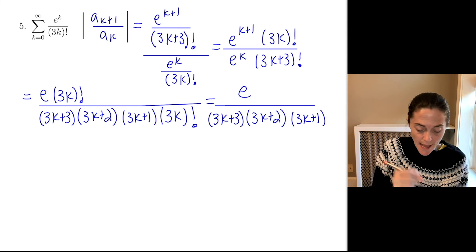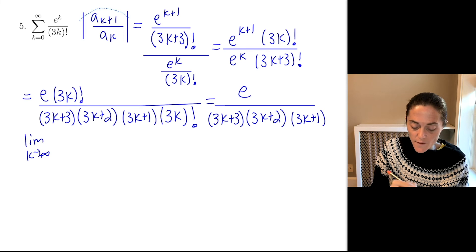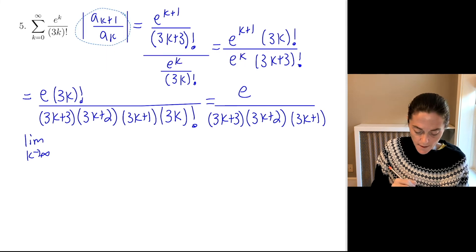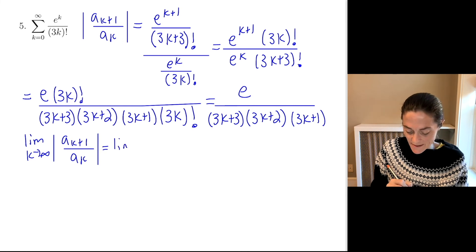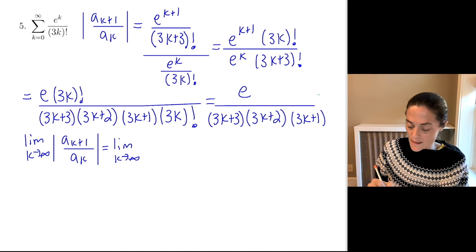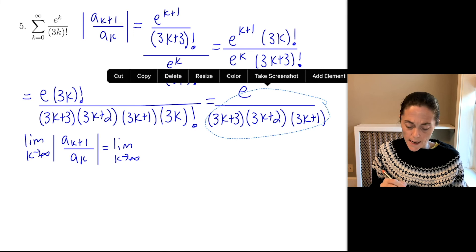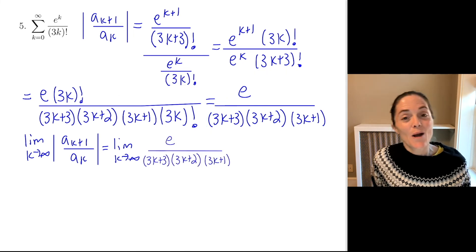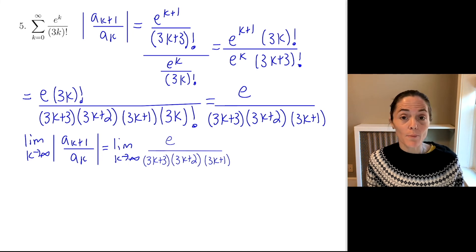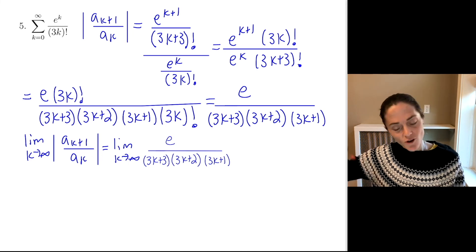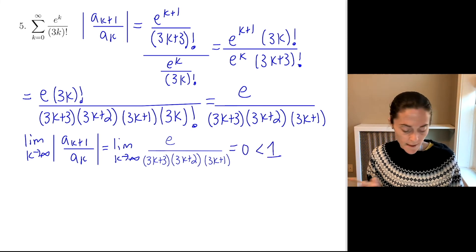I'm ready to take a limit. We take a limit as k goes to infinity, absolute value a_{k+1} over a_k, which is a limit as k goes to infinity of this. This is simplified. Now, you could certainly multiply all of this out, but I don't need to. What do I see looking at this? Well, my numerator is the constant. My denominator is some degree 3 polynomial. In particular, my denominator is growing without bound. And so this limit is 0, which is certainly less than 1.